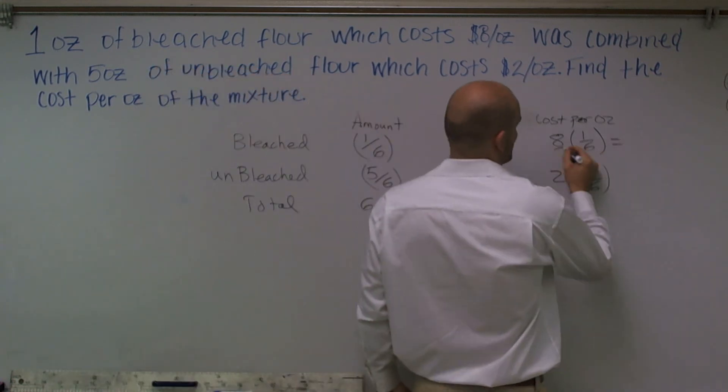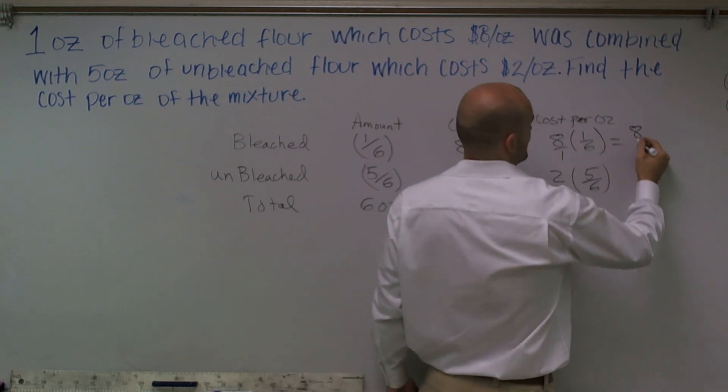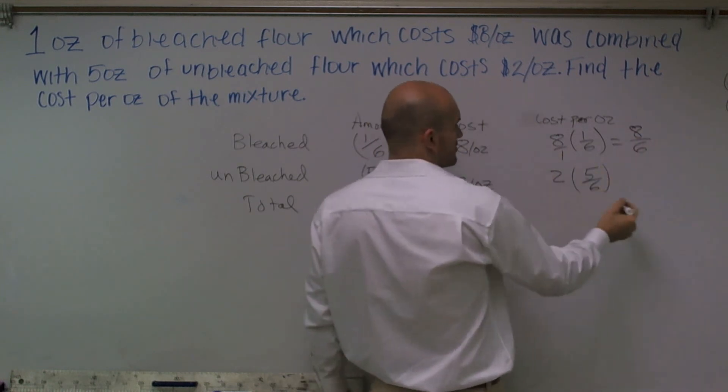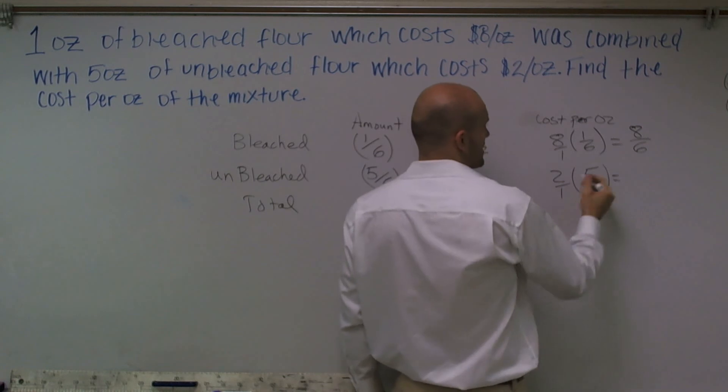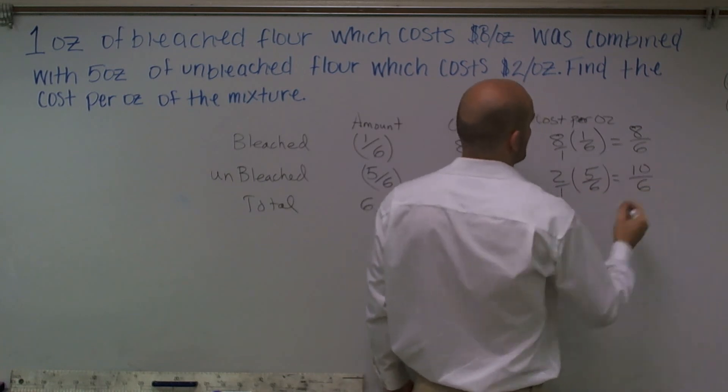So here, multiplying my numerator and my denominators across, I get 8/6. Here, I'm going to multiply my numerator and my denominators and I'm going to get 10/6.